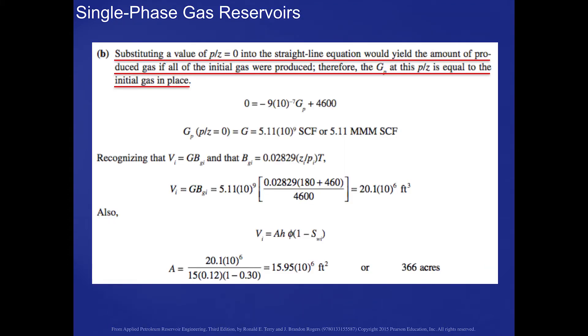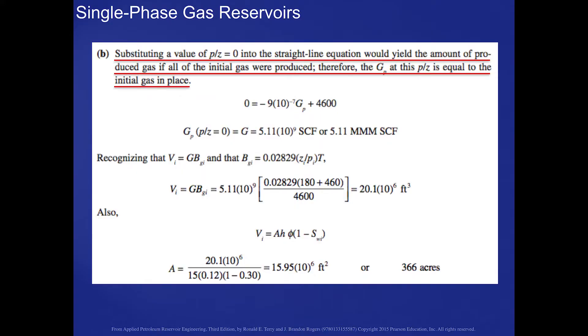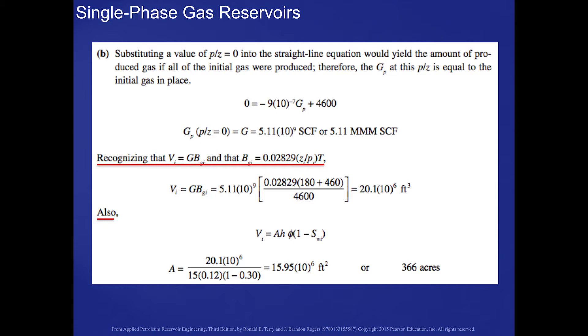For Part B, we substitute P over Z equal to zero into the straight-line equation, because producing the reservoir down to a pressure of zero means G sub P at that point reflects the initial gas in place. We calculate a G sub P of 5.11 billion SCF. Recognizing that V sub i, the volume the gas occupies in reservoir units, equals G times B sub g i, we then use V sub i equals A times H times phi times (1 minus water saturation) and solve for A, the areal extent, getting a value of about 366 acres.